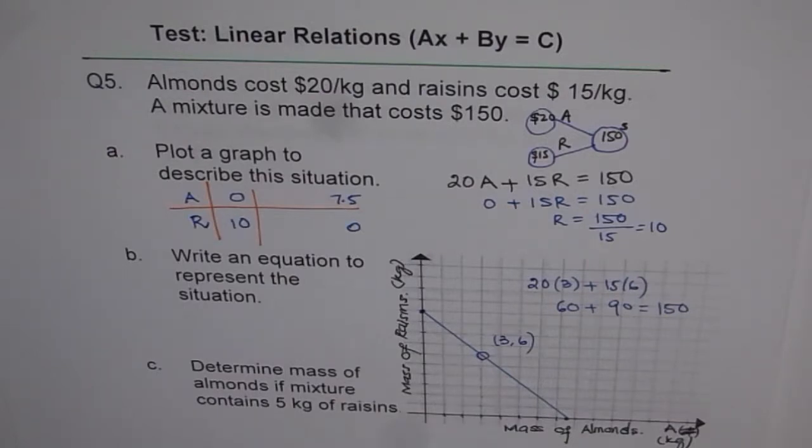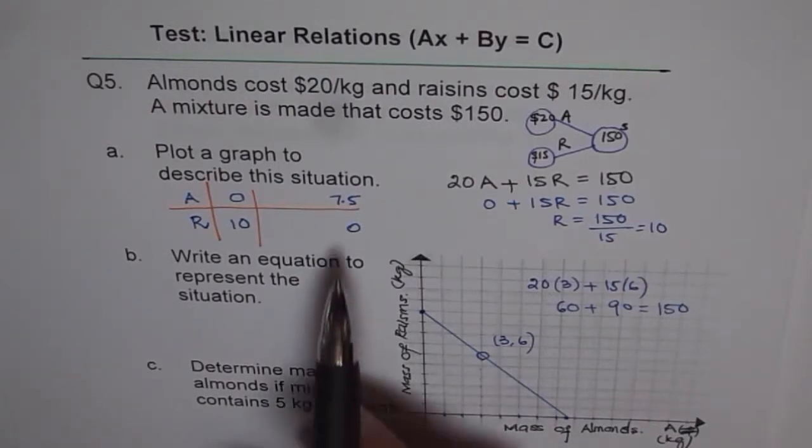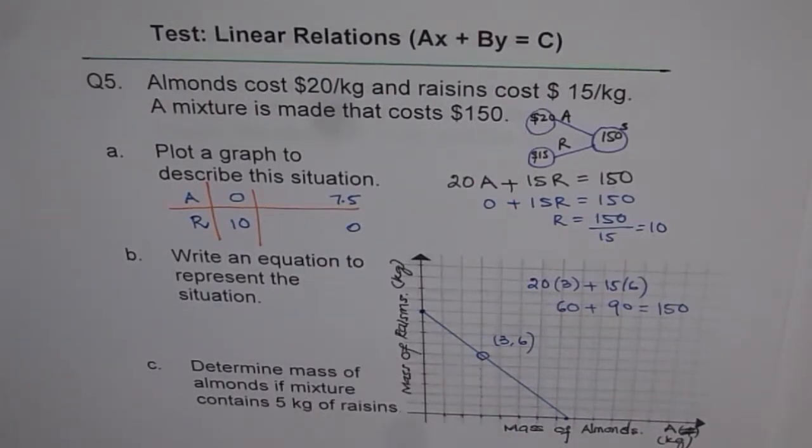Now it is important to note that in this particular case, I have connected the line. And the reason is that the mass could go in decimal numbers like we had here in 7.5. So we can connect this line, since we can have fractions of almonds or raisins in this particular case.